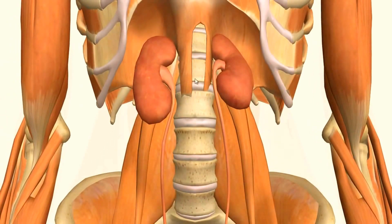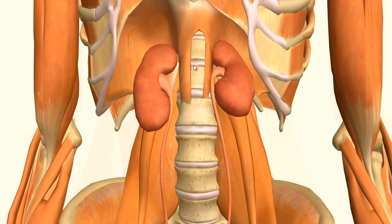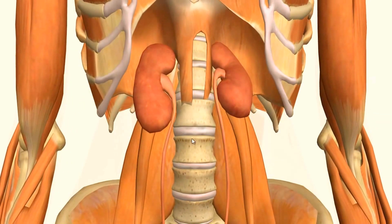The kidneys sit at roughly the level of T12 down to L3. We've got T12 up here and L3 is down here. They're not quite shown extending that far in this model, but most textbooks say they extend from T12 down to L3.